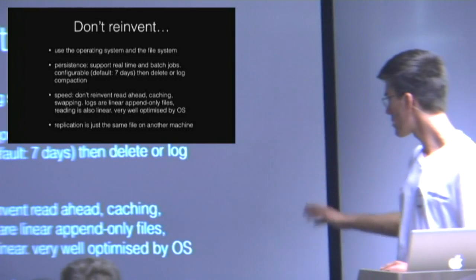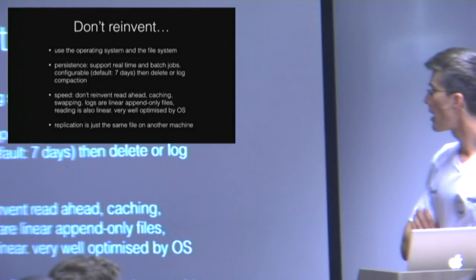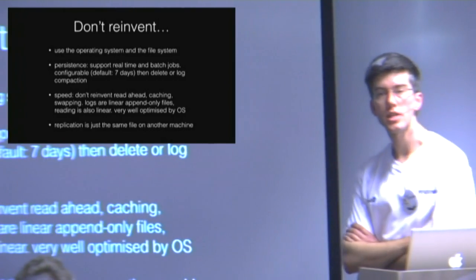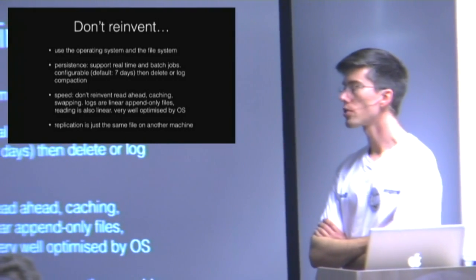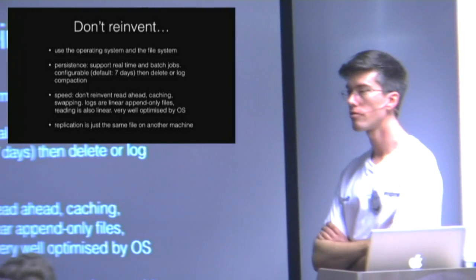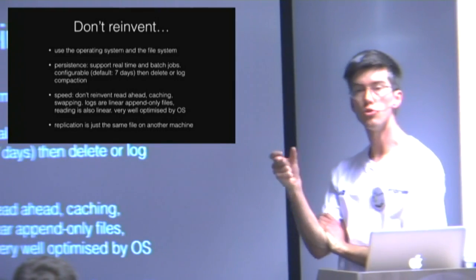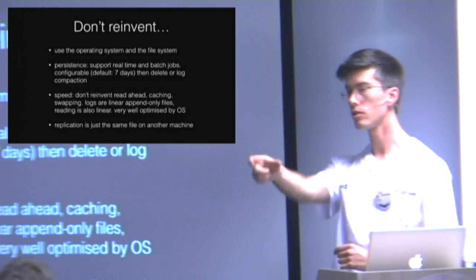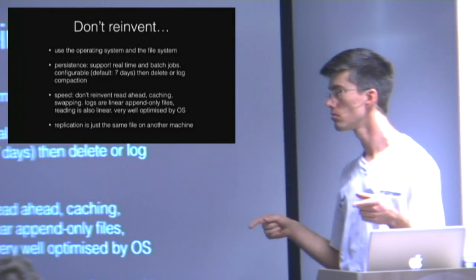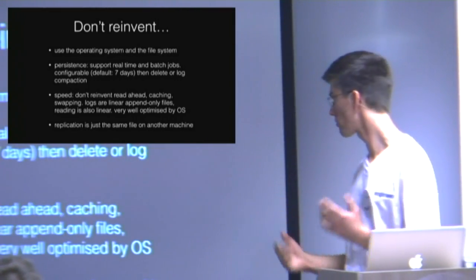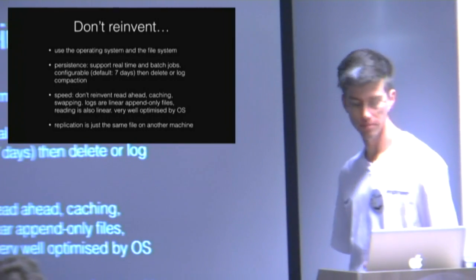Speed — OSs are well optimized for this sort of stuff. And replication is easy as well — it's just the same log file on a different machine. If you set the replication factor to three, instead of writing a new message to one file on one server, it'll write it to one file on three servers. That's a configurable thing. And if you wanted to restore your data, you just copy a file.